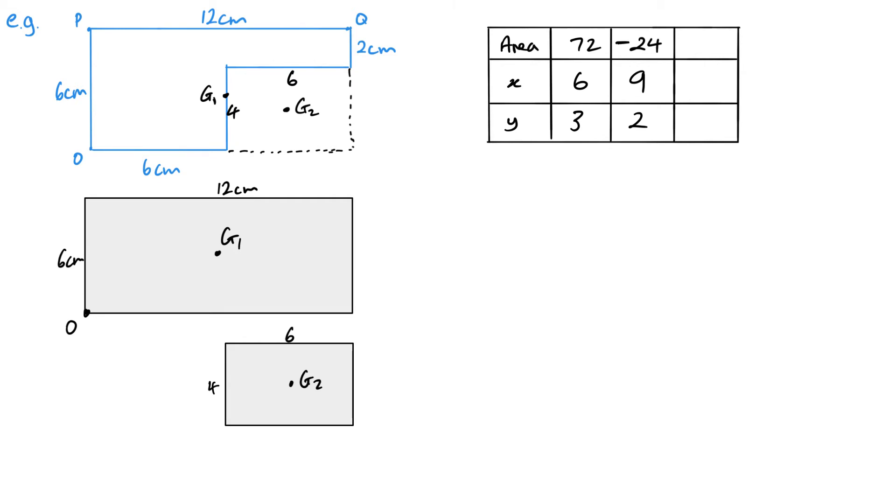And then, obviously, my total area here will be 48. 72 minus 24. And it's X bar and Y bar. The same kind of setup as before. The area multiplied by the position. So all I want to do here is multiply these out.